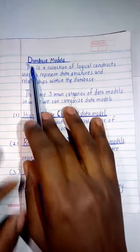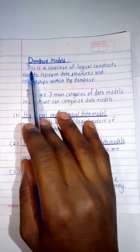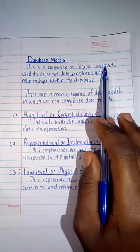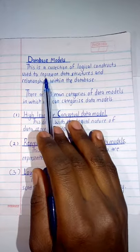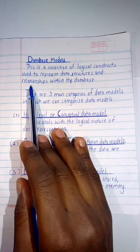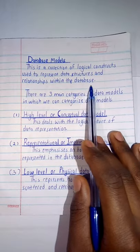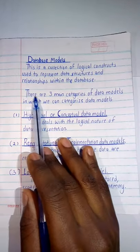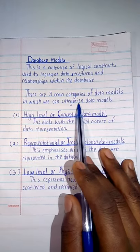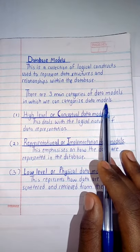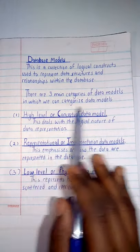Then looking at the database models - this is a collection of logical constructs, it comes from the word construction, used to represent data structures and relationships within the database. And then there are three main categories of data models in which we can categorize data models.